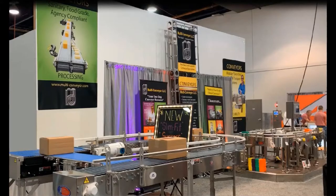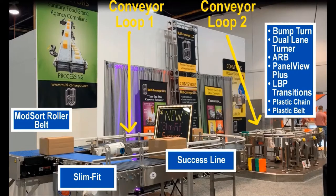Multi-Conveyor recently displayed over 10 technologies on two separate conveyors at a recent PAC Expo show. The loops featured slim fit, success line, mod sort, bump turns, dual-lane turners, ARB, panel view plus, transitions, and more.